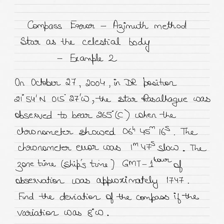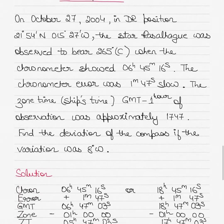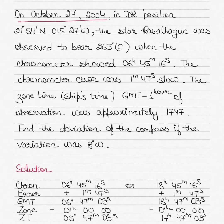Today's video is on the calculation of compass error using the azimuth method, with a star as the celestial body. This is example two in the series; I have previously discussed a star and the link to that video is in the description below. There are a number of videos on celestial navigation in the description, so watch all those videos and practice all the questions. In today's question, the date is October 27th, 2004, and the dead reckoning position is latitude 21° 54' North.